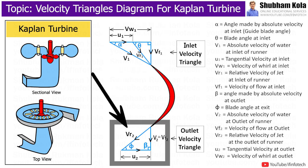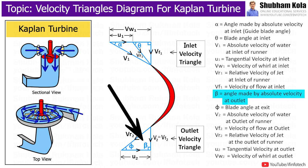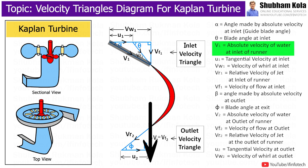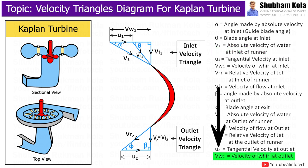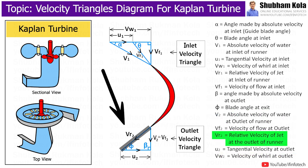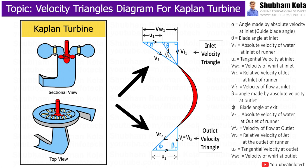Now we will draw the outlet velocity triangle for Kaplan turbine. In Kaplan turbine, water comes out in the axial direction, meaning the outlet angle β is 90 degrees. When β is 90 degrees, the velocity of water at outlet V2 is vertical, the horizontal part Vw2 is zero, so V2 equals Vf2 and Vw2 is zero. The relative velocity at outlet is Vr2, making angle φ with the horizontal, and U2 is the blade velocity at outlet. This completes the velocity triangle diagram for Kaplan turbine.